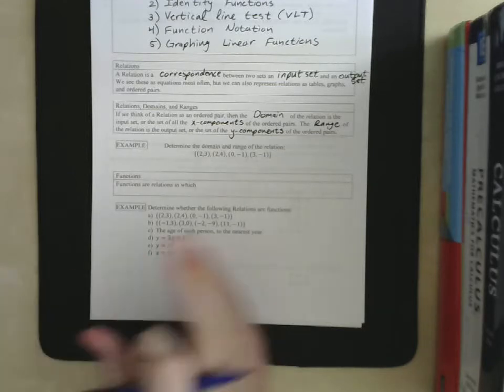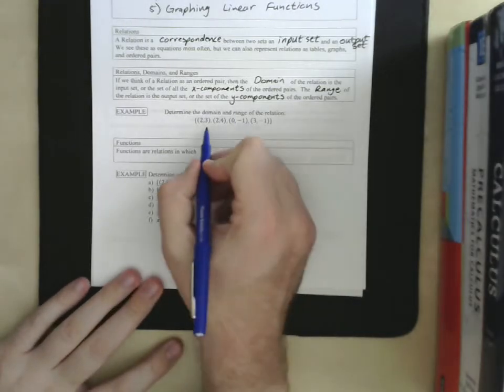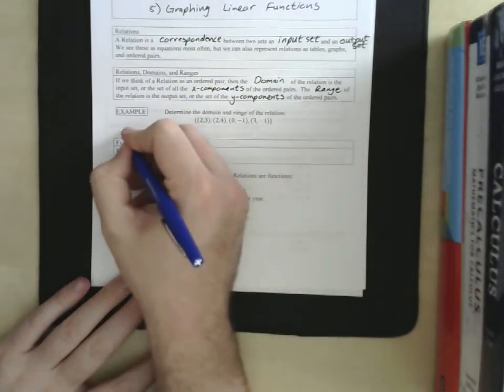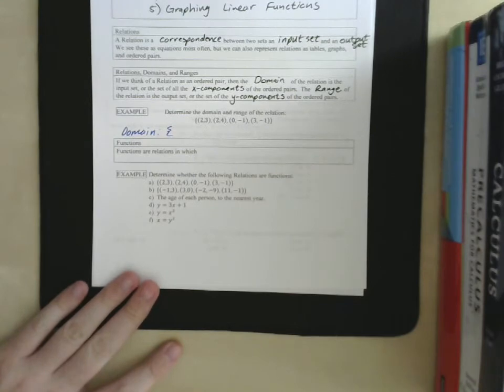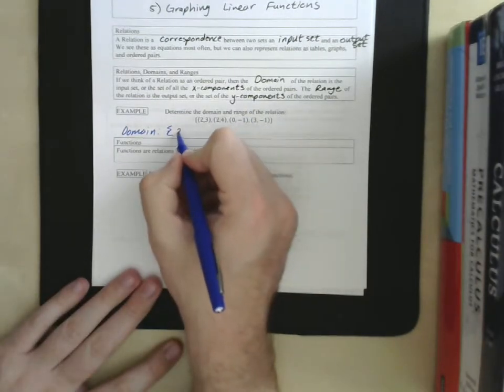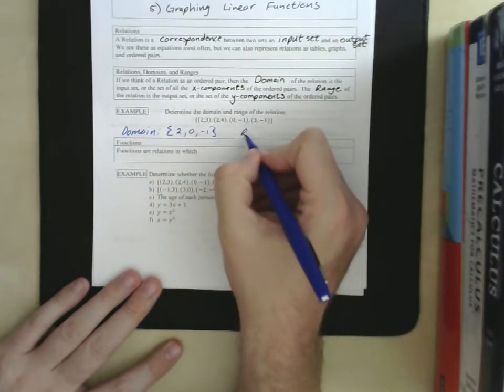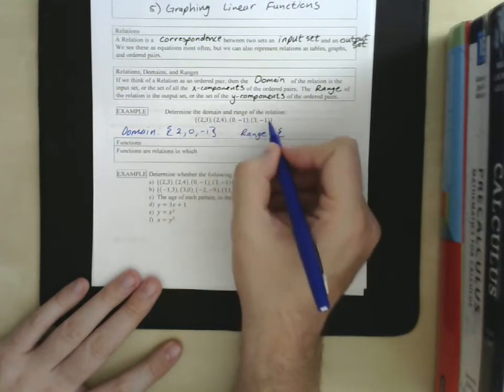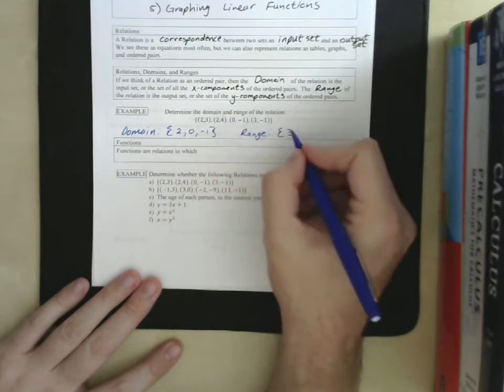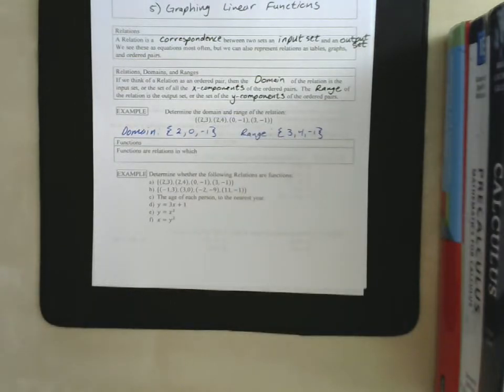All the Y values in your ordered pairs make up your range. All the X values in your ordered pairs make up your domain. So, let's look at a little example here. So, we have a set of ordered pairs. This is a relation. And we want to determine the domain and the range. The domain is the set of the X components. Now, since we have 2 and 2, we don't need to repeat 2, we have 0, and we have negative 1. That's the domain. The range, again, we have negative 1 twice. We don't need to list it twice. So, our range is 3, 4, and negative 1.